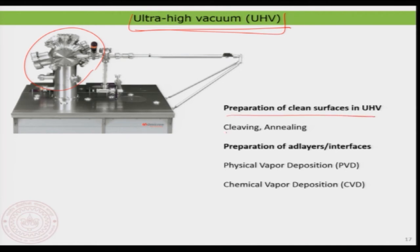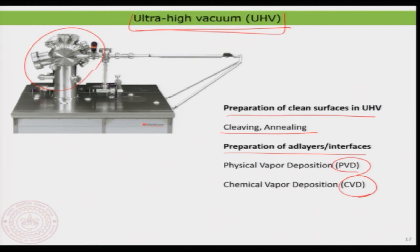Using ultra-high vacuum, we learned different methodologies for cleaning surfaces: simple cleaving, annealing, sputtering, and so on. We also learned how to prepare ad layers or interfaces using two different methods — physical vapor deposition and chemical vapor deposition. Chemical vapor deposition is suitable for larger-scale preparation, while physical vapor deposition is more expensive as it is done in ultra-high vacuum, but it is very important for generating layers with low impurity and high precision.